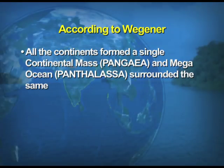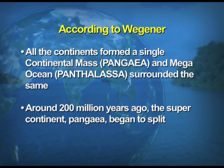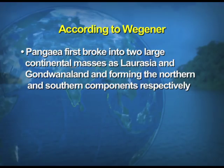According to Wegener, all the continents formed a single continental landmass known as Pangaea, and this was surrounded by a mega ocean what we call Panthalassa. Around 200 million years ago the supercontinent Pangaea began to split. This first broke into two large continental masses — Laurasia forming the northern part and Gondwana land forming the southern components.